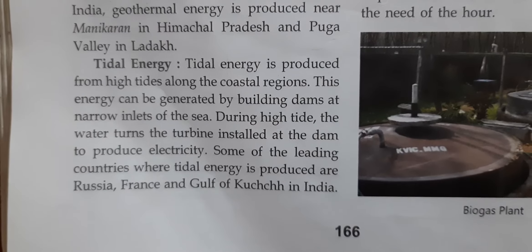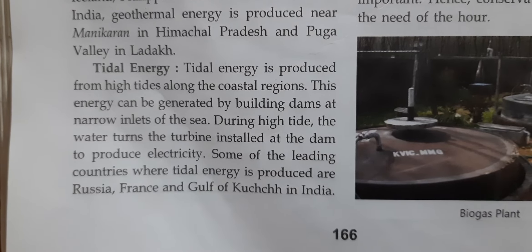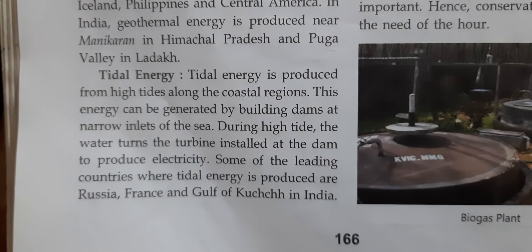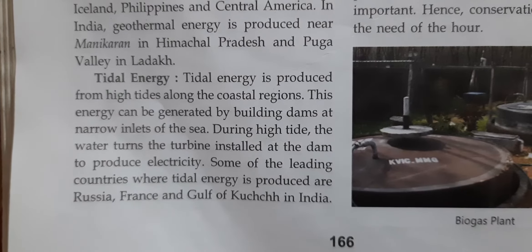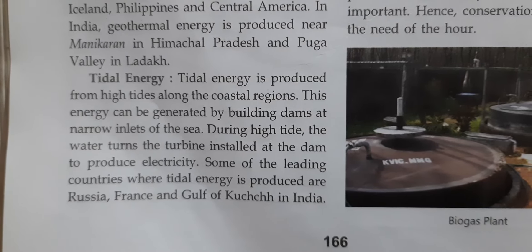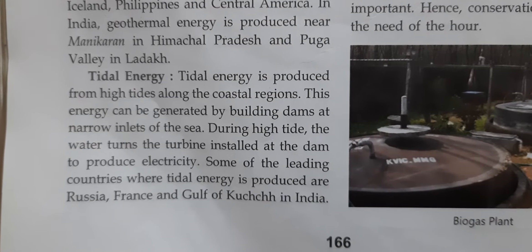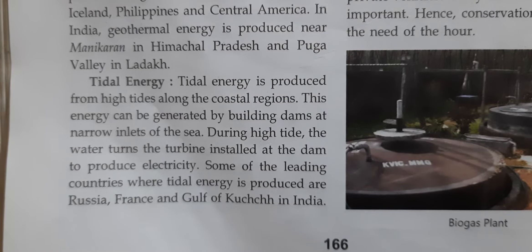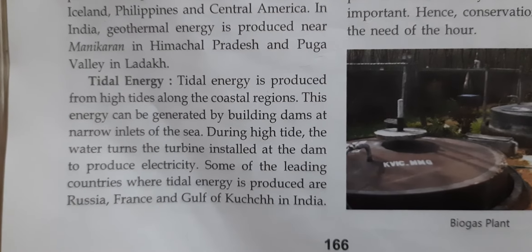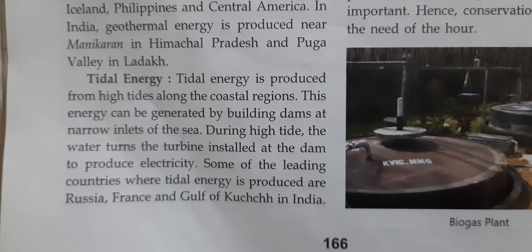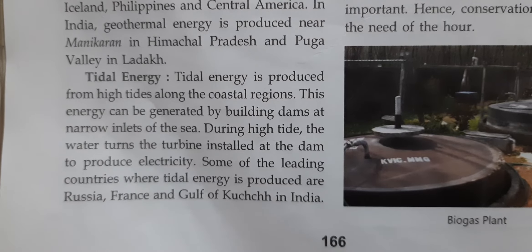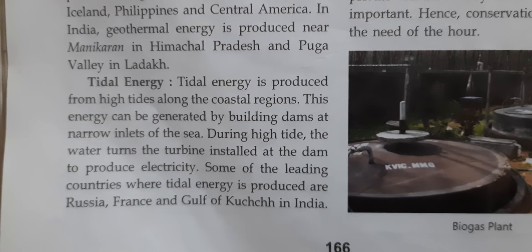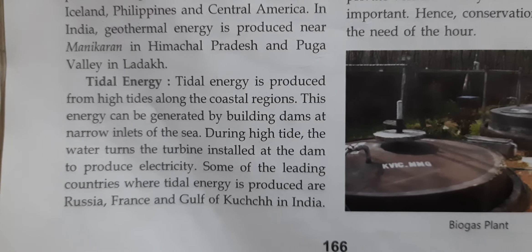Tidal energy is produced by high tides along the coastal region. This energy can be generated by building dams at narrow inlets of the sea. During high tide, the water turns the turbines installed at the dam to produce electricity. Some of the leading countries where tidal energy is produced are Russia, France, and the Gulf of Kutch in India.